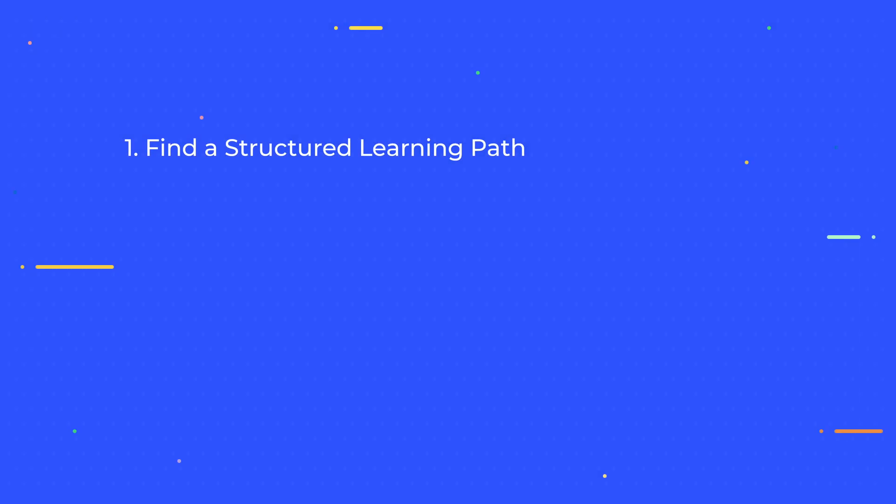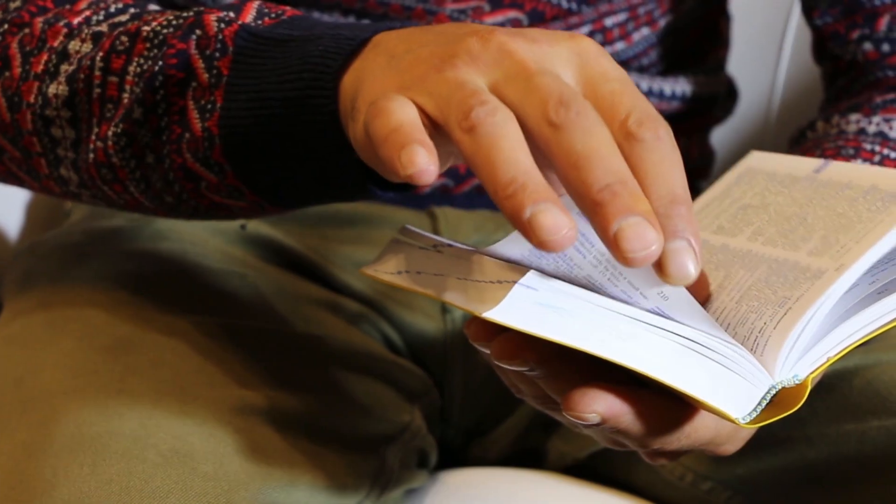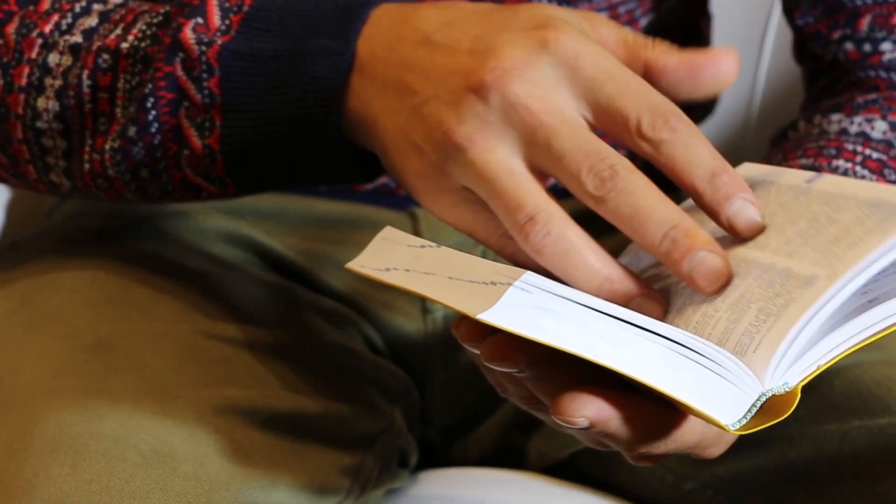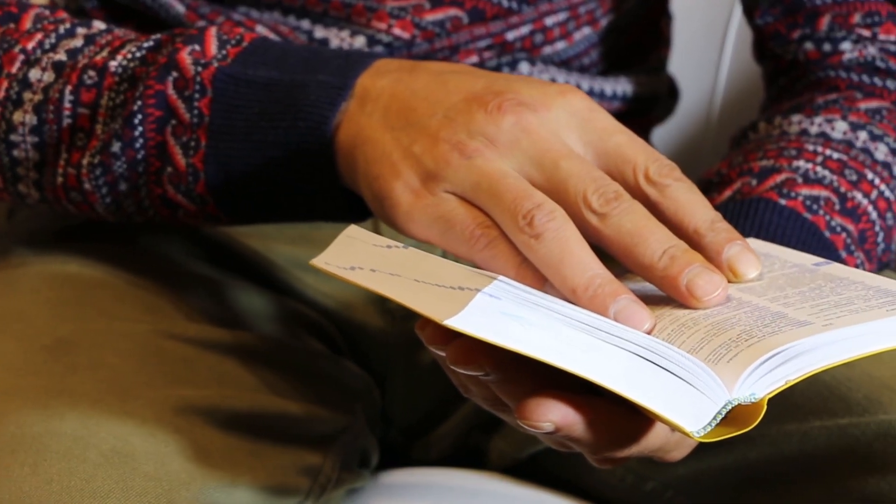The second thing I'd make sure to do is to practice while I'm learning. I know this sounds like standard advice, but this is what caused me to fail at learning iOS the first time. Because I had been programming for so long, I thought that I could read an iOS book cover to cover without practicing anything. And I was breezing through the book — I understood everything — so it gave me a false sense of security.